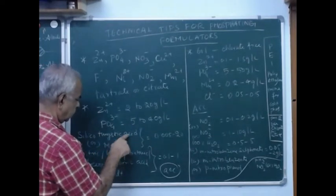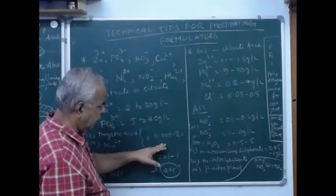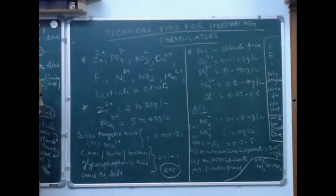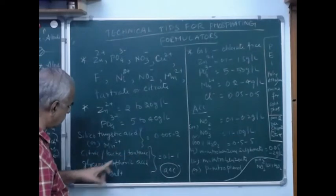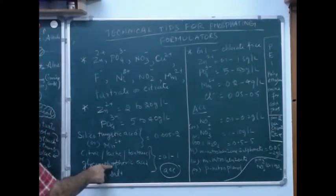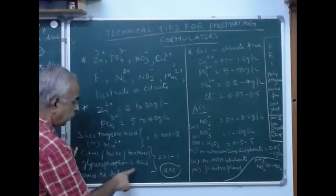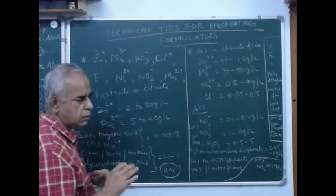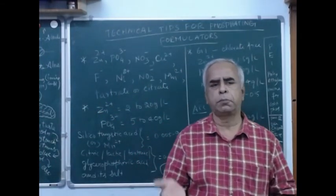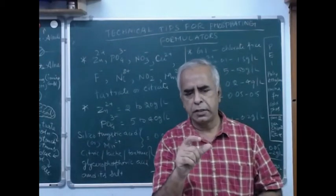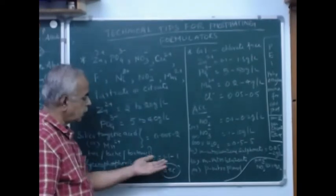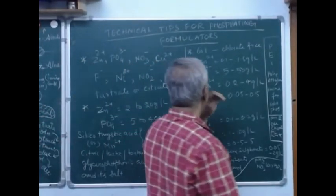Silicotungstic acid is one of the accelerators. The maximum dosage is 0.05 to 2 grams per liter. Manganese is 2 grams per liter. Then citric, lactic, or tartaric acids, and glycerophosphoric acid and its salt. You cannot take all together - you have to consider only one accelerator. An accelerator is an oxidizing agent that increases the speed of reaction. Nitrite tunes the fine crystal nature of zinc phosphate.